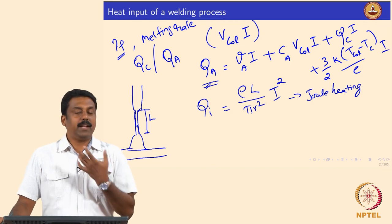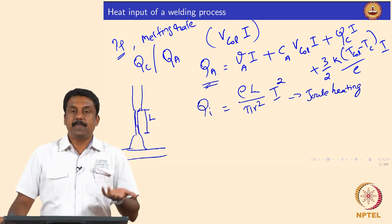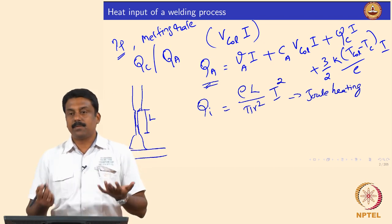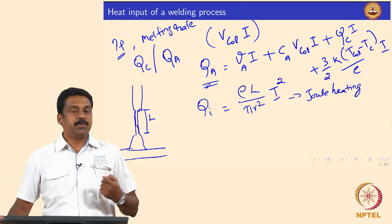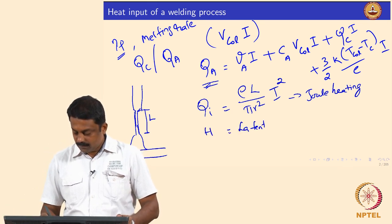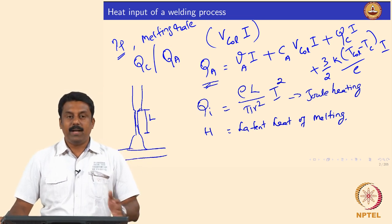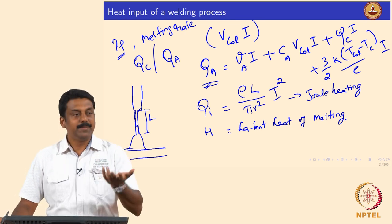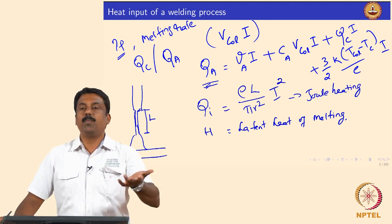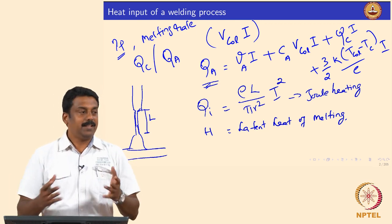These two terms — heat from the arc and Joule heating — are the heat gain that can be spent for melting if your consumable electrode is the anode. There are two additional terms: first, the latent heat of melting, which can be exothermic or endothermic depending on the system. Most of the time heat must be supplied for melting. Second, once melted, the droplet must be heated from the melting temperature to the transfer temperature — it may not be at the melting point when it detaches.